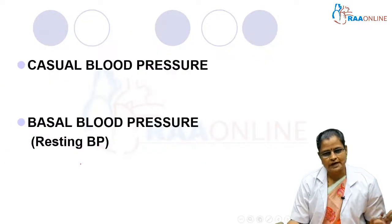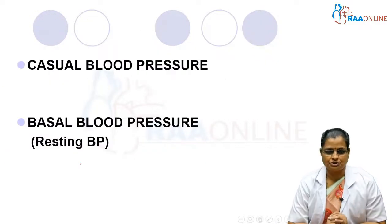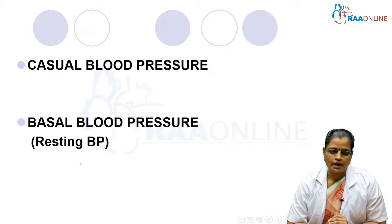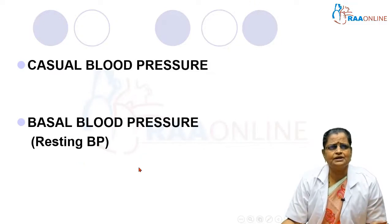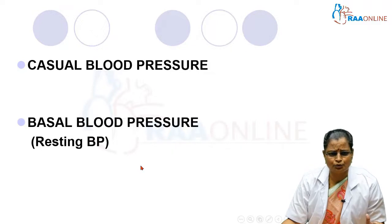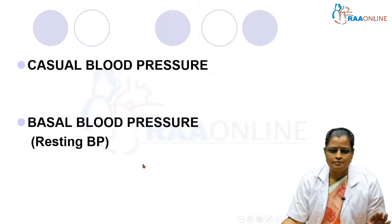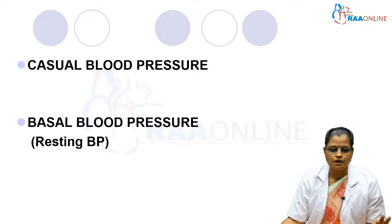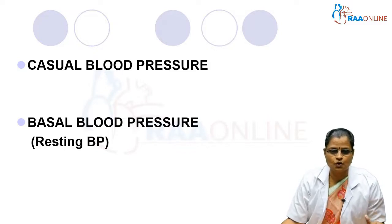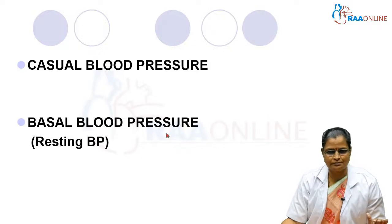Casual blood pressure is the blood pressure measured at any time during the day or night. Basal blood pressure is the blood pressure measured after a period of complete physical and mental rest, and is also called resting BP.